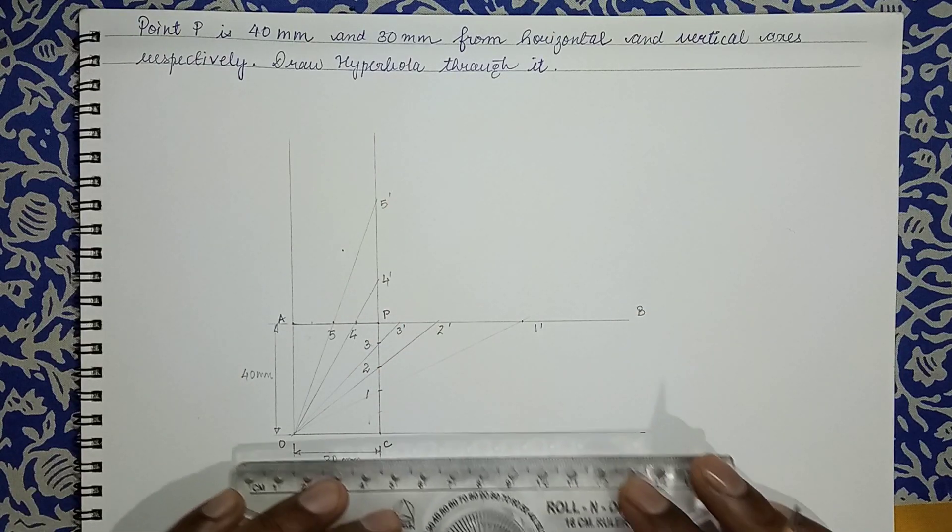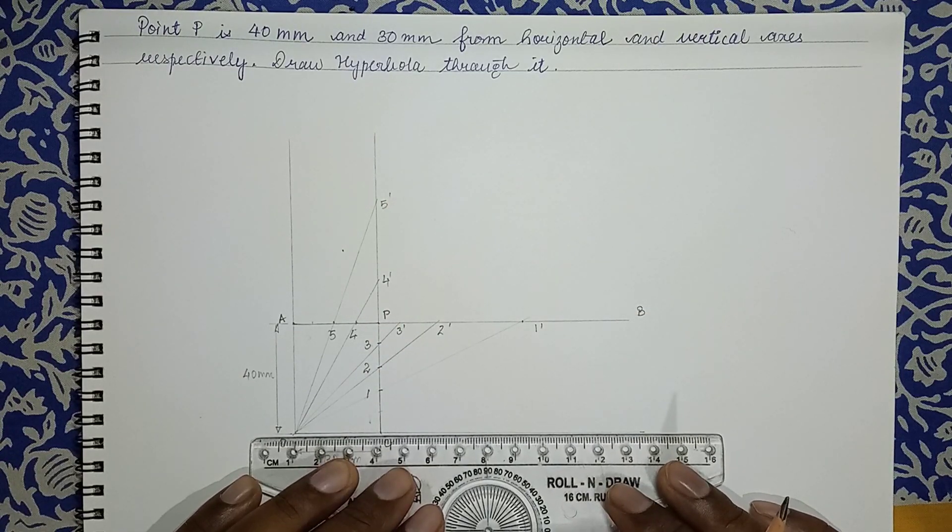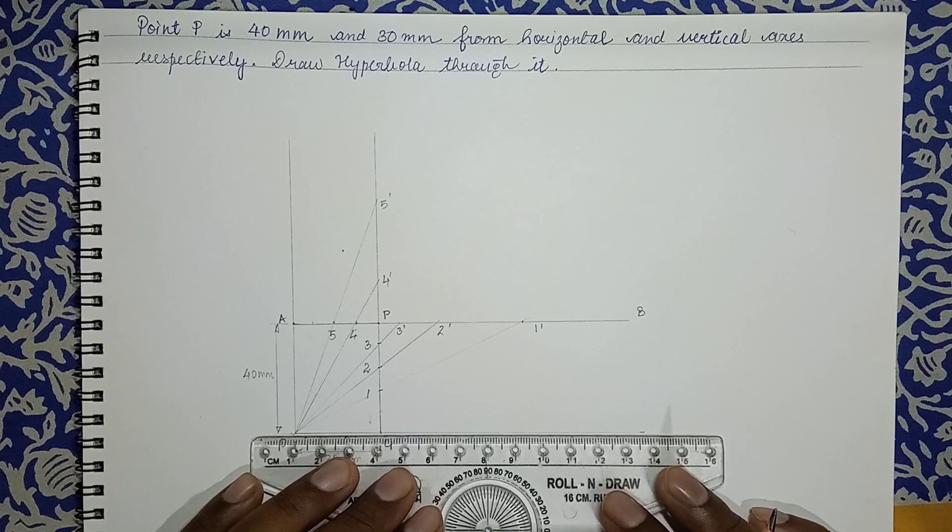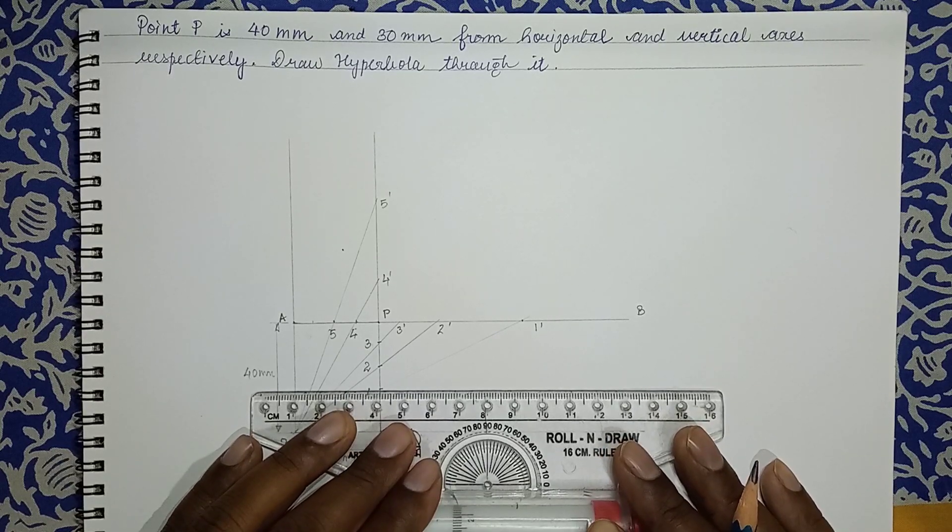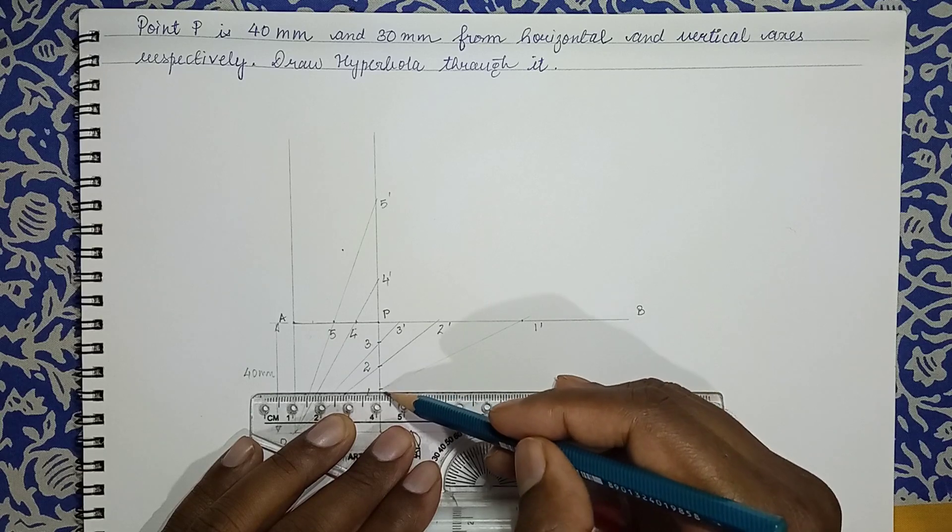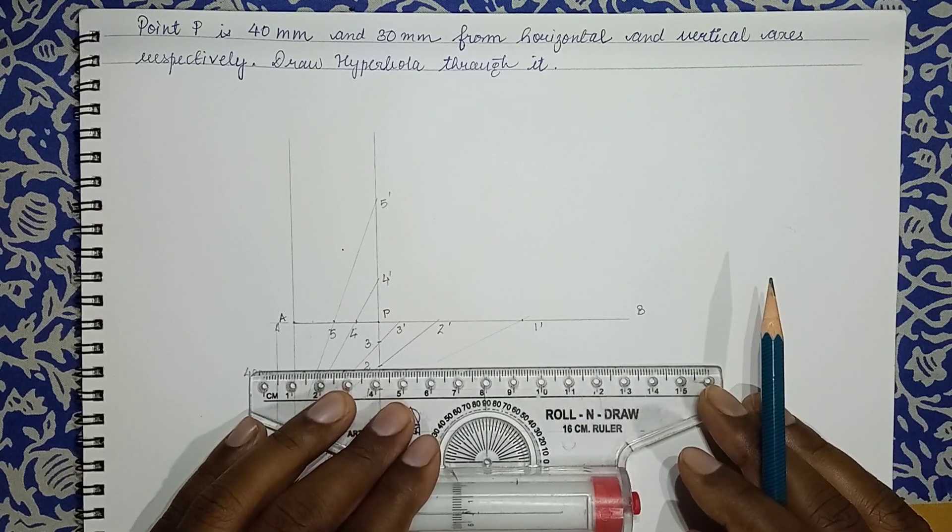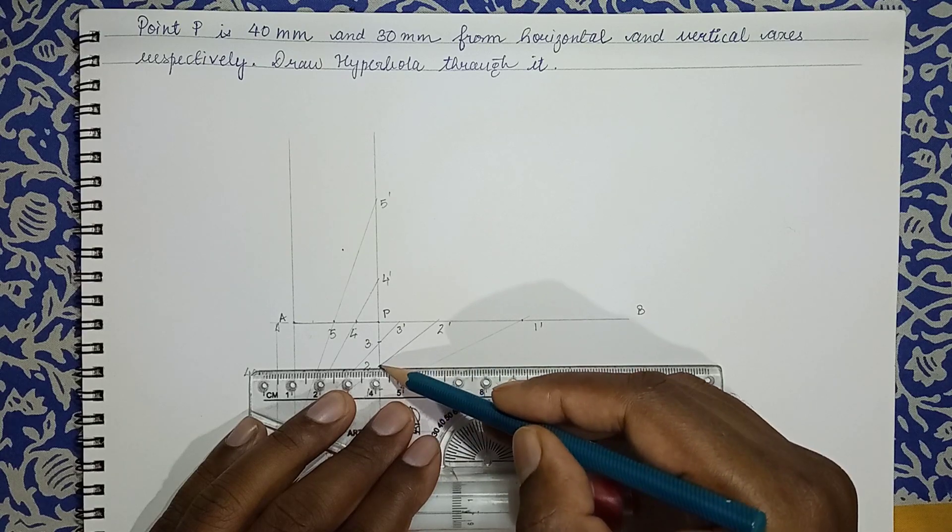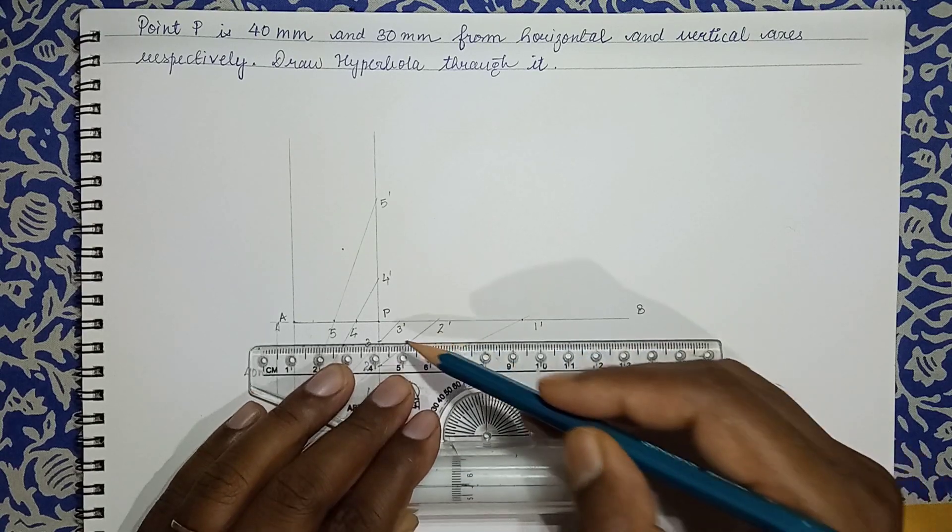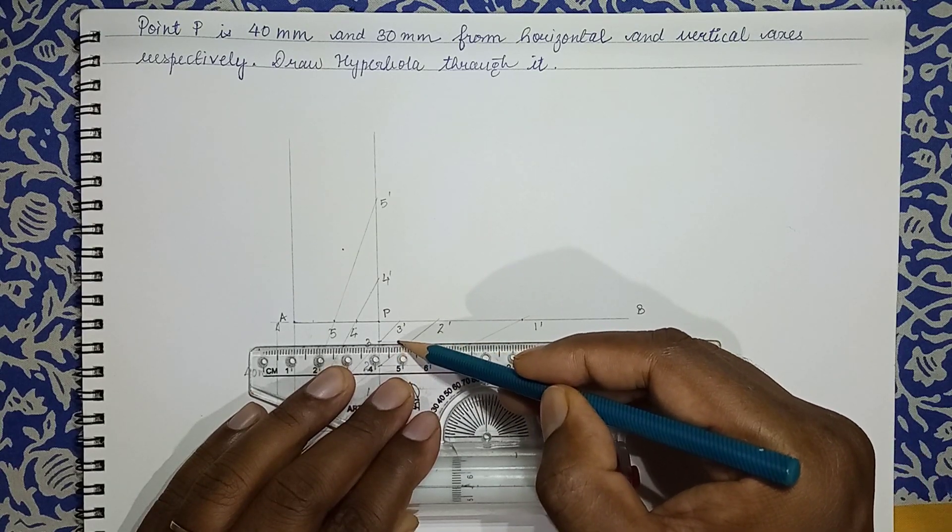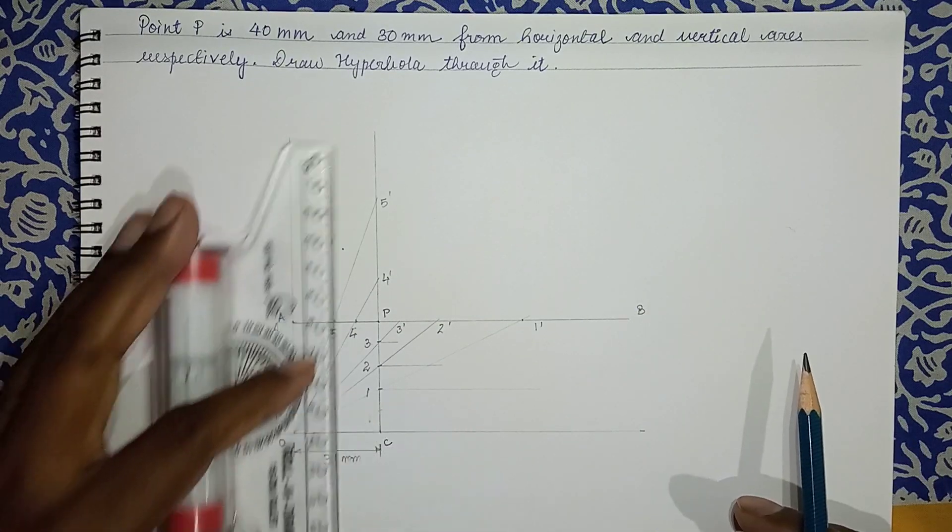So as per this method, rectangular method, what we need to do is we draw a line horizontal from 1 till 1'. We have a horizontal line over here from here till 2', from here till 3'. And then with the help of vertical line, we intersect.